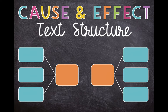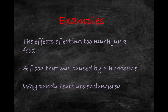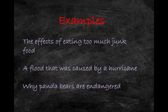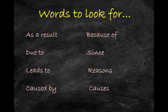The next text structure we're going to look at is cause and effect. Cause and effect text structure is when the author describes something that has happened which has had an effect on, or caused, something else to happen — it's like a chain reaction. The effect is what happened, and the cause is why it happened. Examples include reading about what happens if you eat too much junk food, a flood caused by a hurricane, or why panda bears are endangered. Signal words to look for: as a result, because of, due to, since, leads to, reasons, caused by, or causes.